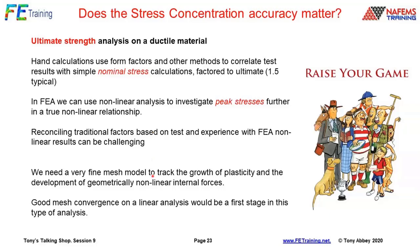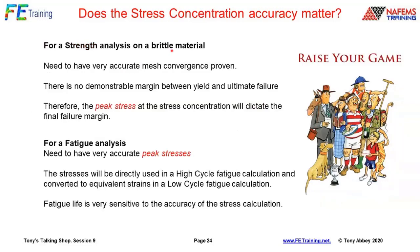For ductile materials assessed against limit loads, traditional form factors and methods factored stresses to ultimate by typically 1.5. For FEA ultimate strength analysis we need nonlinear analysis with geometric nonlinearity — internal force redistribution is quite important and can change distribution significantly. We need a good mesh convergence in the linear analysis as a first stage. For brittle materials it certainly matters: there's no margin between yield and ultimate, so peak stress and stress concentration directly dictate the final margin.